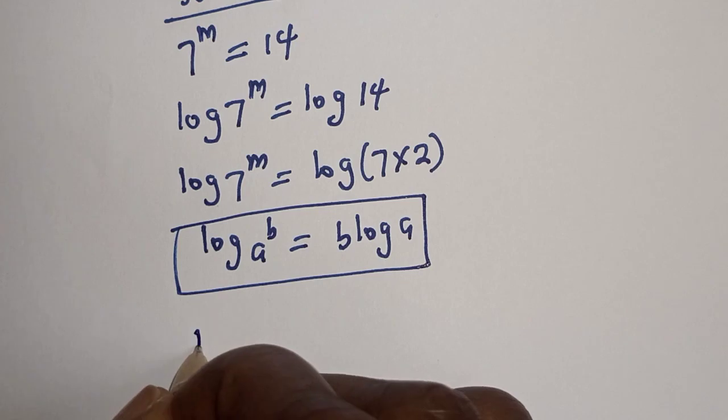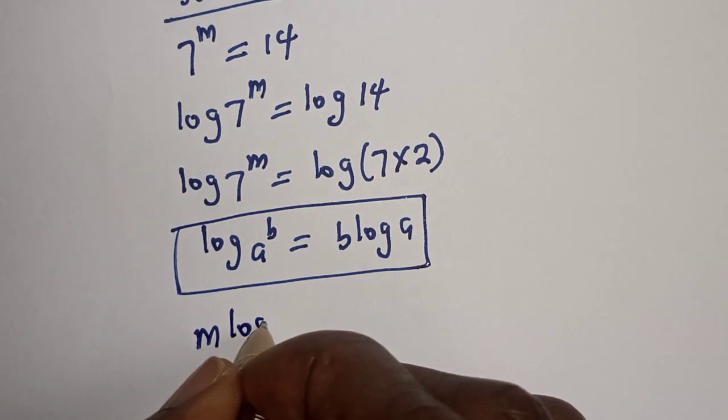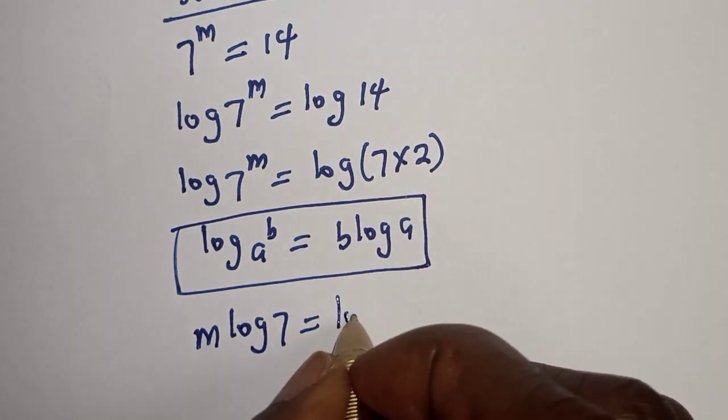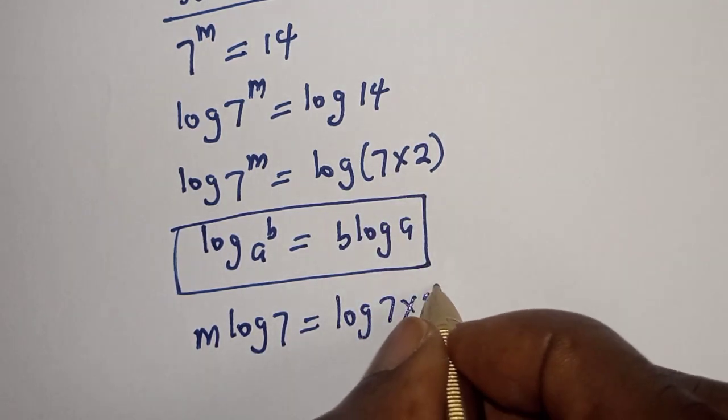Then, here is m log 7 is equal to log 7 multiplied by 2.